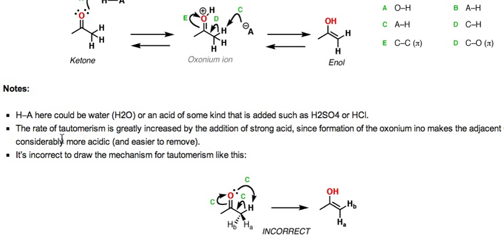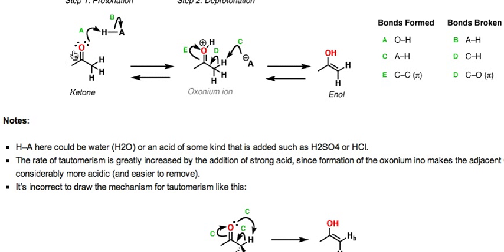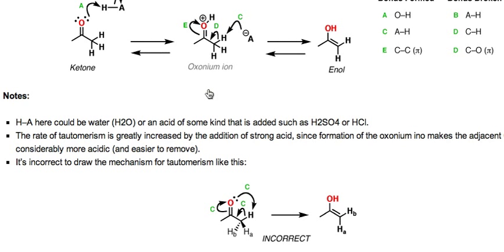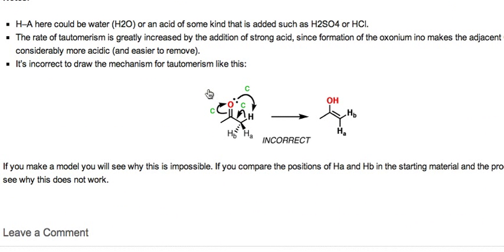So HA here, like I said, could be water or some other kind of acid that's added, such as sulfuric acid or HCl. Now, the rate of this tautomerism is greatly increased as you add strong acid, since you're going to increase the acidity of the alpha carbon when you protonate the oxygen. There's one last little pitfall to be aware of, how to draw the mechanism of this reaction, and this is very important.